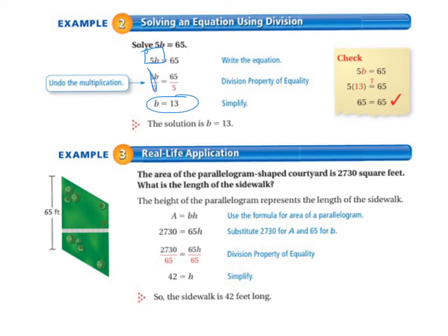So then we check it, and 5 times 13 equals 65. It checks out, and we're good to go.